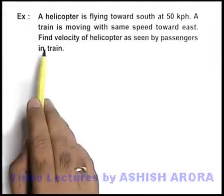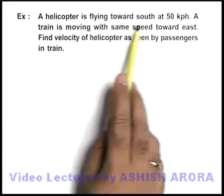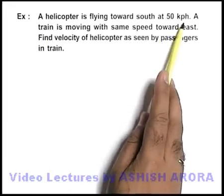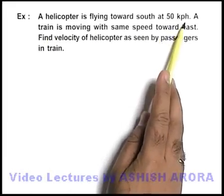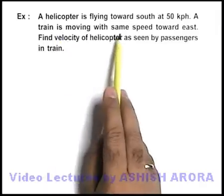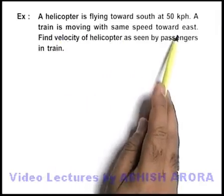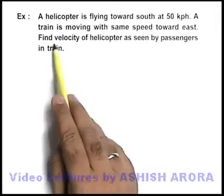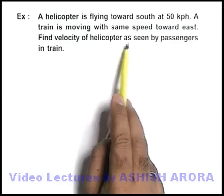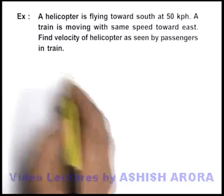In this example, we are given that a helicopter is flying towards south at fifty kilometers per hour, and a train is moving with the same speed towards east. We are required to find the velocity of the helicopter as seen by passengers in the train.